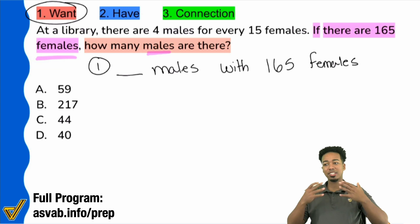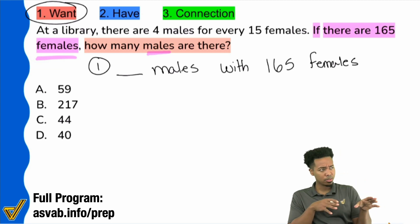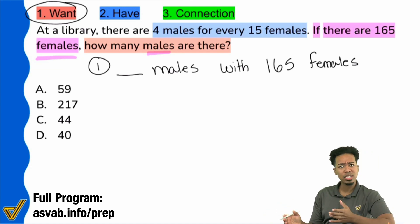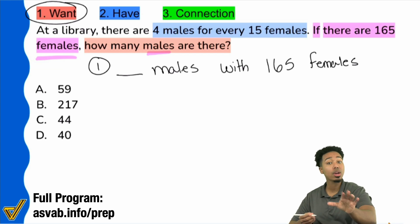So this is where your ASVAB experience really comes into play. Because with some experience, you're going to be able to look at a problem like this and say, hey, they're asking me for males, they give me females. And then in the first sentence, if you take a look, what do you notice? I notice that they tell me at a library, there are four males for every 15 females. So it looks like twice already, they compare males to females. This is an automatic bomb drop of proportions. This is a proportions work problem because again, with proportions, the main idea is comparing the same things in the same way. Take a second to write that down. Compare the same things in the same way. That's how you know you're dealing with a proportion.